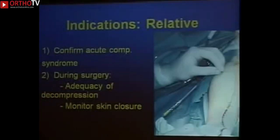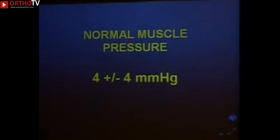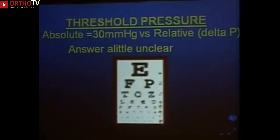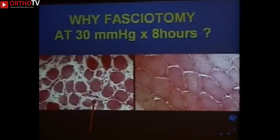Relative indications for pressure measurement are: to confirm diagnosis, to monitor a patient on the ward, or to verify adequate decompression at surgery — pressure monitoring can help limit your skin incision and guide closure. Normal muscle pressure is about 4 mmHg; our threshold for surgery is around 30 mmHg. Others use a delta-P relative to diastolic or systolic pressure. We like 30 mmHg because it's a simple number, and it's supported by animal studies showing that 30 mmHg for about eight hours produces muscle necrosis and nerve death.